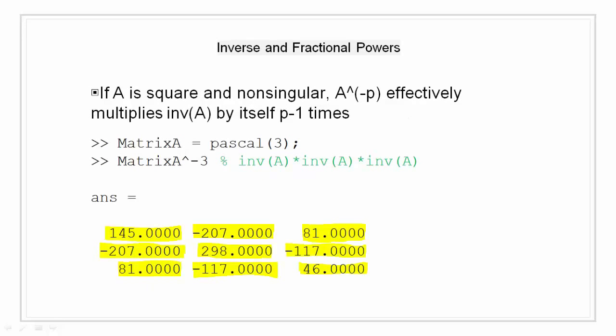Inverse powers. If matrix A is a square matrix and it is a non-singular matrix, then matrix A to the power negative p will basically be a multiplication of inverse of A by itself p minus 1 times.